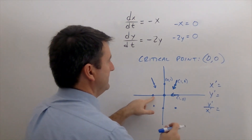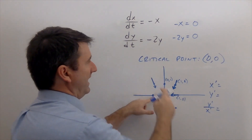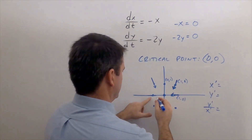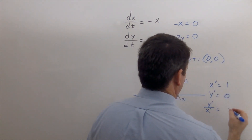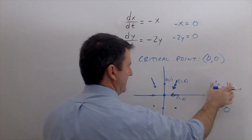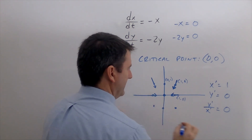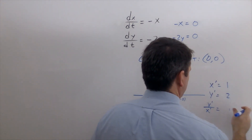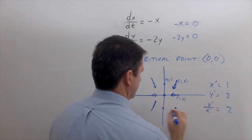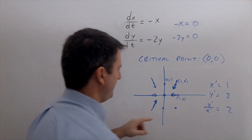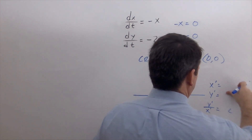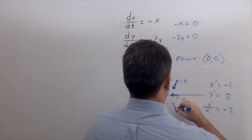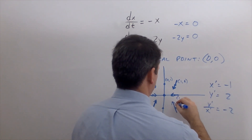At the point (-1, 0): plugging in zero for y makes the whole expression zero, so the slope is zero. The change in x is positive, so it's going to the right. At (-1, -1): x prime is 1 and y prime is 2, giving slope of 2, going up and to the right. At (1, -1): x prime is negative 1 and y prime is positive 2, giving slope negative 2, going to the left and up.